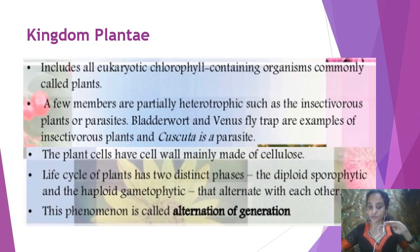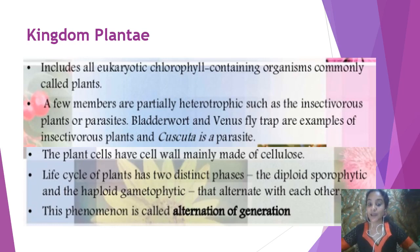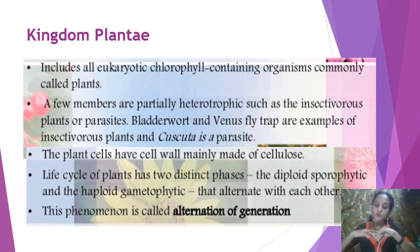Plants prepare their food with the help of photosynthesis. There are some exceptions — some plants are heterotrophic or partially heterotrophic. We have insectivorous plants, and the examples given are bladderwort and Venus flytrap. One insectivorous plant is Cuscuta, which is actually a parasite. Another characteristic of plants is they have a cell wall, which is made up of cellulose.